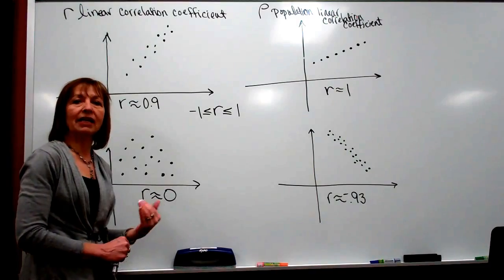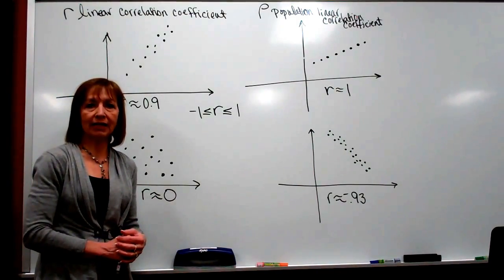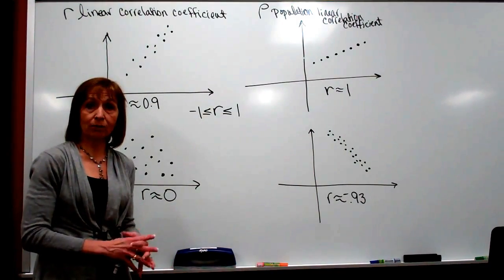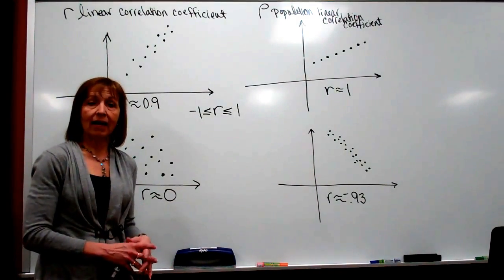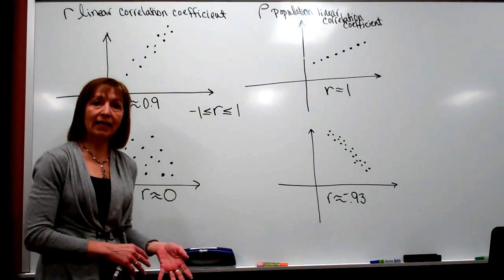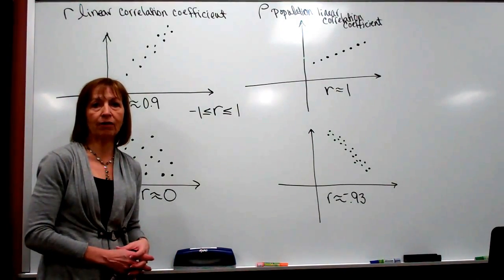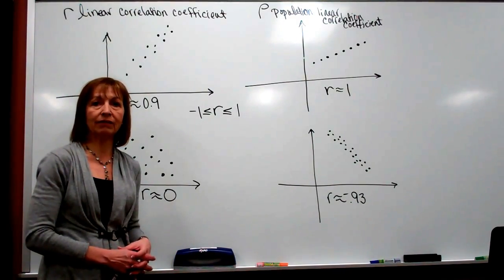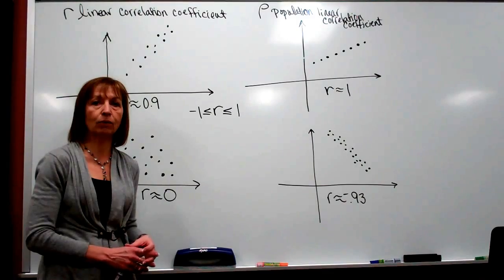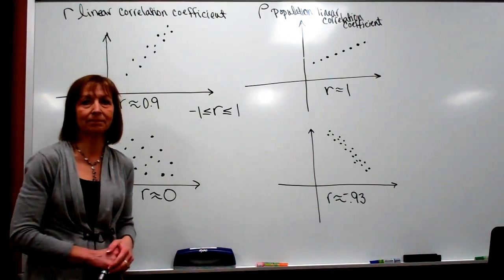That's just an idea of getting a rough estimate of your linear correlation just by looking at scatter plots. In another segment, we'll look at how to get the actual value of r if we're given the specific x-y coordinates of the data values that we've collected. Thanks very much!